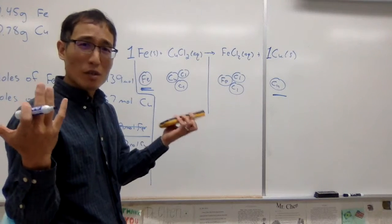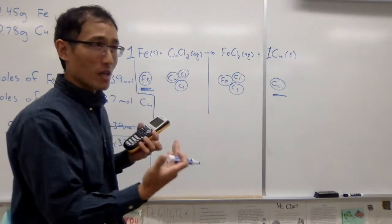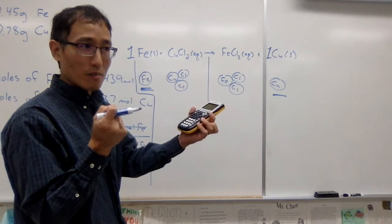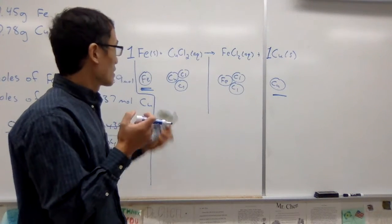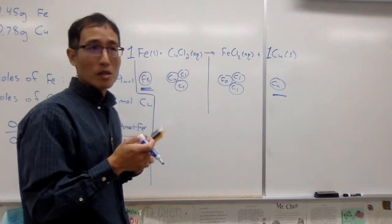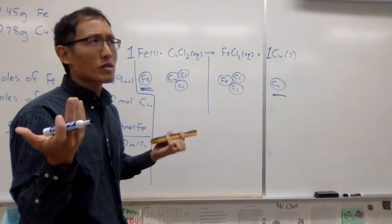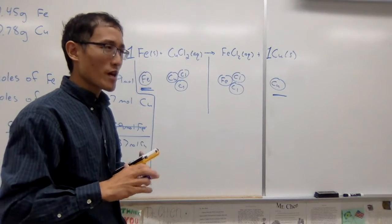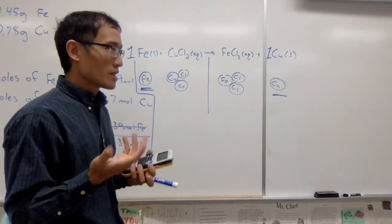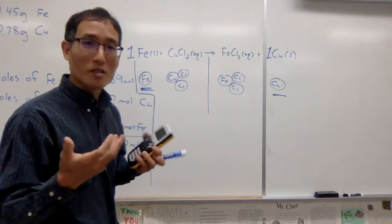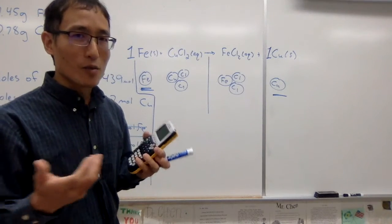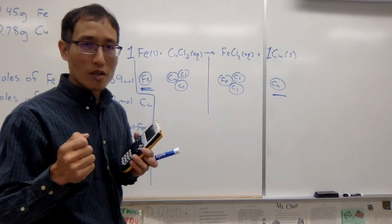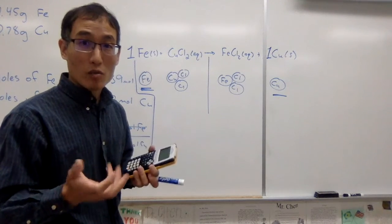This chemical equation tells us a lot about the ratios of how these things interact. For every one iron, we have one copper. You might ask — is it always a 1-to-1 ratio? No, it can be different. We'll take a look at another reaction now where it might not be a 1-to-1 ratio.